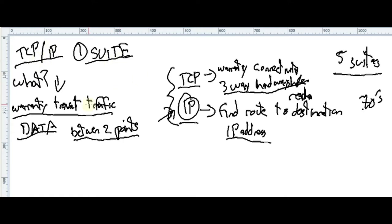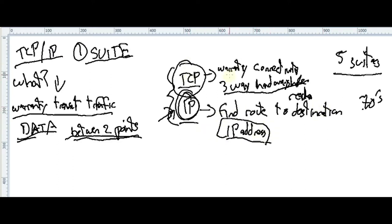What is the TCP/IP suite? It's a suite for warranty traffic — to transmit traffic or data between two endpoints. How does the TCP/IP suite guarantee traffic between two endpoints? By two strong protocols: IP, which finds the route to the destination through an IP address; and TCP, which guarantees connectivity between the two endpoints with something called a three-way handshake. The counterpart of IP address in TCP/IP is a port.